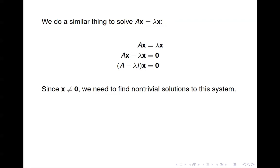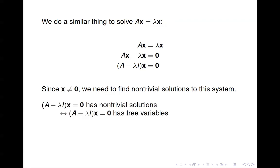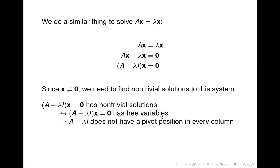We know that x, to be an eigenvector, can't be the zero vector. So we have a homogeneous system here and we want to find non-trivial solutions to it. This system is going to have non-trivial solutions if it has free variables. It has free variables if the matrix A minus lambda I does not have a pivot position in every column, and that happens when A minus lambda I is not invertible — because if it doesn't have a pivot in every column, it has fewer than n pivot positions. That happens when the determinant of A minus lambda I is equal to 0.